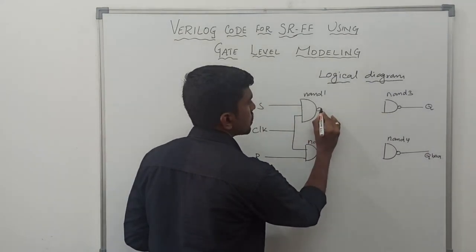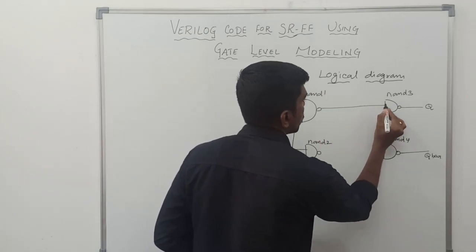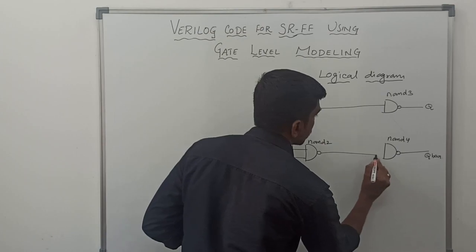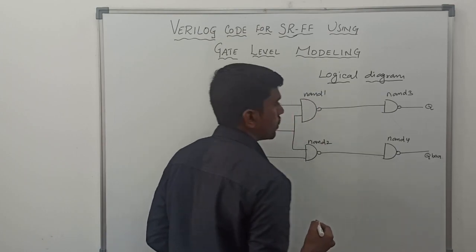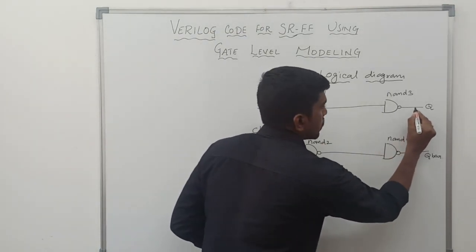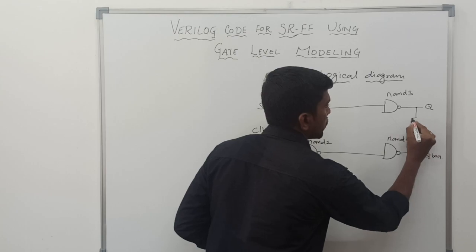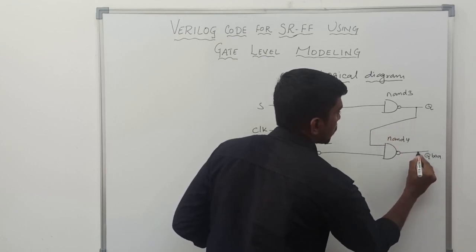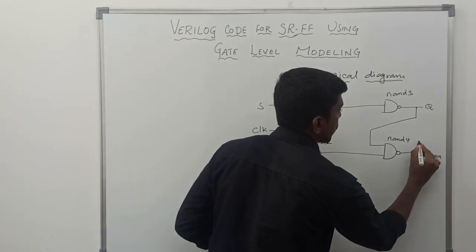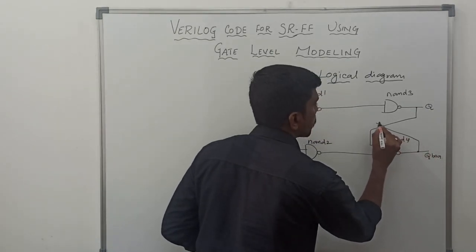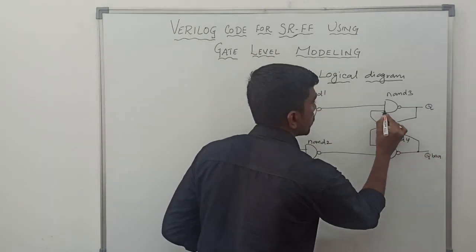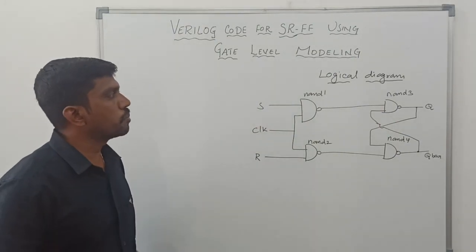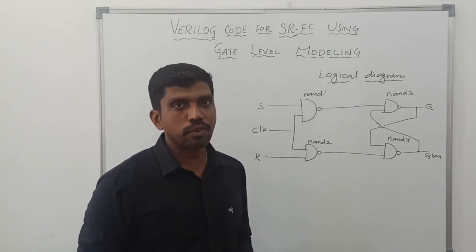The output of NAND2 is given to the input of NAND4. The Q value is connected to the input of NAND4, and the Q bar value is connected to the input of NAND3. This is the simple logic diagram for SR flip-flop.